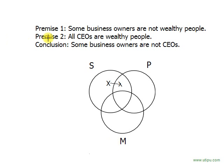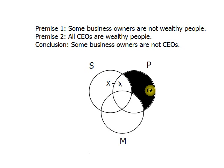Then we go to premise two, which is 'all CEOs are wealthy people.' In this case, CEO is our P-term and wealthy people is our M-term. So we have to show that all of the P's are M's. Since we're doing an all claim, we shade. First we shade here, showing that all P's are M's.